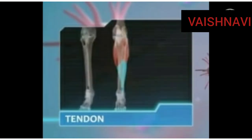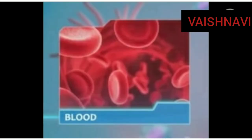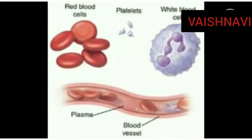Sixth one is tendon. Tendon is made up of fibers. The tendon joins the muscles to the bone. It is also made up of collagen. Now let us know about blood — it is the seventh type of connective tissue. Blood means red fluid. The fluid that flows inside canals in our body is called blood.